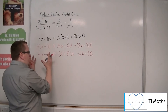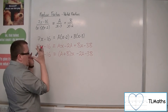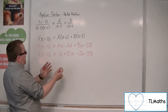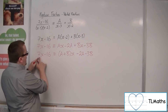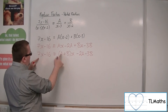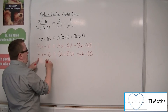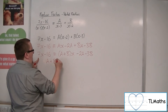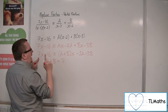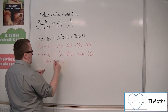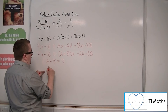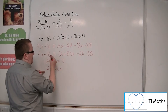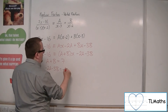Now if the left-hand side has to be precisely the same as the right-hand side, the coefficient of x must be the same — so a plus b equals 7 — and the constant terms must match, so minus 2a minus 3b equals minus 16.